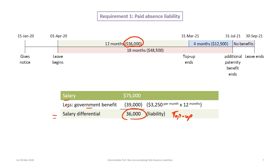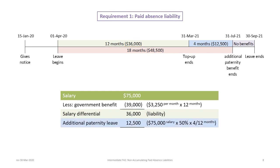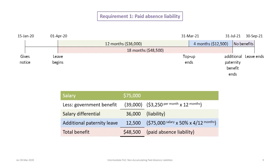Next, we calculate the additional paternity leave — shown in the blue shaded area — as 50% of Mr. Tuvok's salary times four months. The company is allowing him to earn the equivalent of 50% of his salary for up to four months, which is an additional $12,500. This results in a total paid absence liability of $48,500, consisting of the $36,000 salary differential plus the $12,500 additional paternity liability.